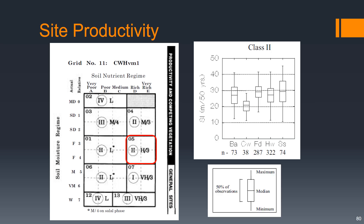Looking up site index class II, we see a box plot of the site index for different species in this class. The middle 50% of observations form the top and bottom of the box — that's the interquartile range. For our site series, for western hemlock, we would expect the interquartile range in height of 50-year-old trees to be about 23 meters to about 31 meters.